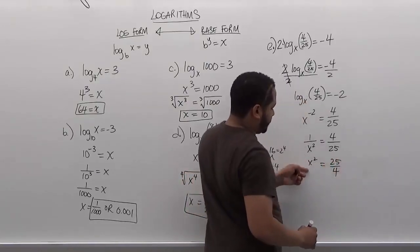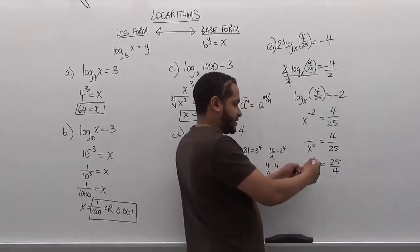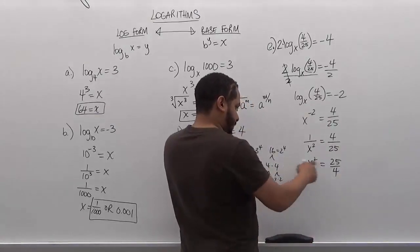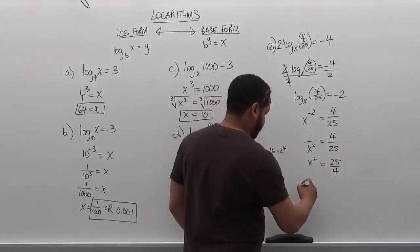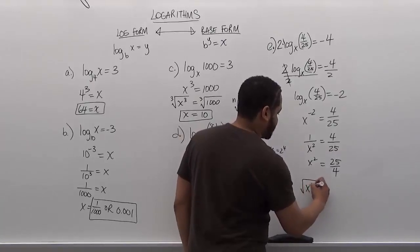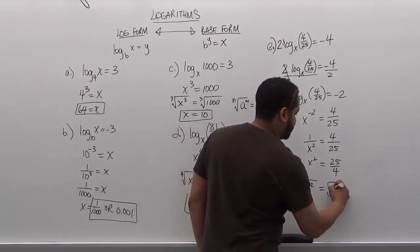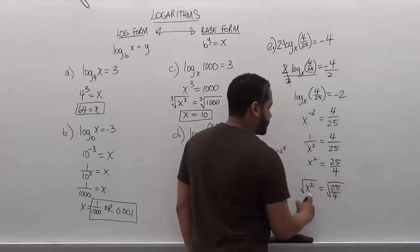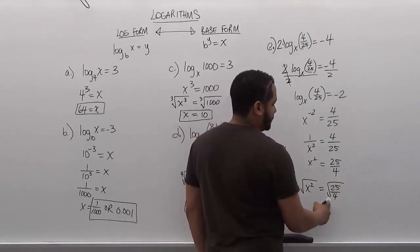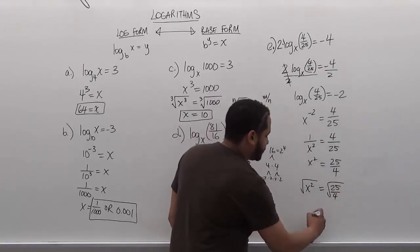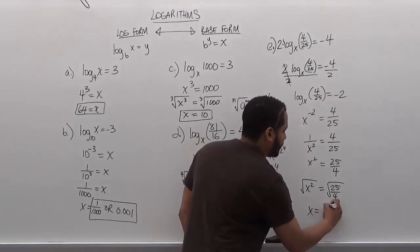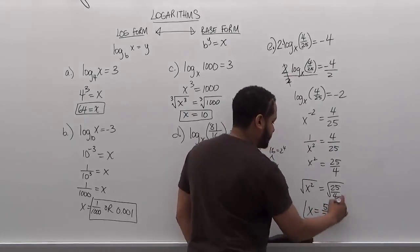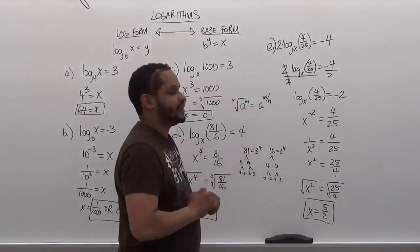Now all we have to do is take the square root of both sides. Taking the square root of both sides, we get the square root of x squared is equivalent to the square root of 25 over 4. So now we have x is equivalent to 5 over 2, and that's our solution for part E of this.